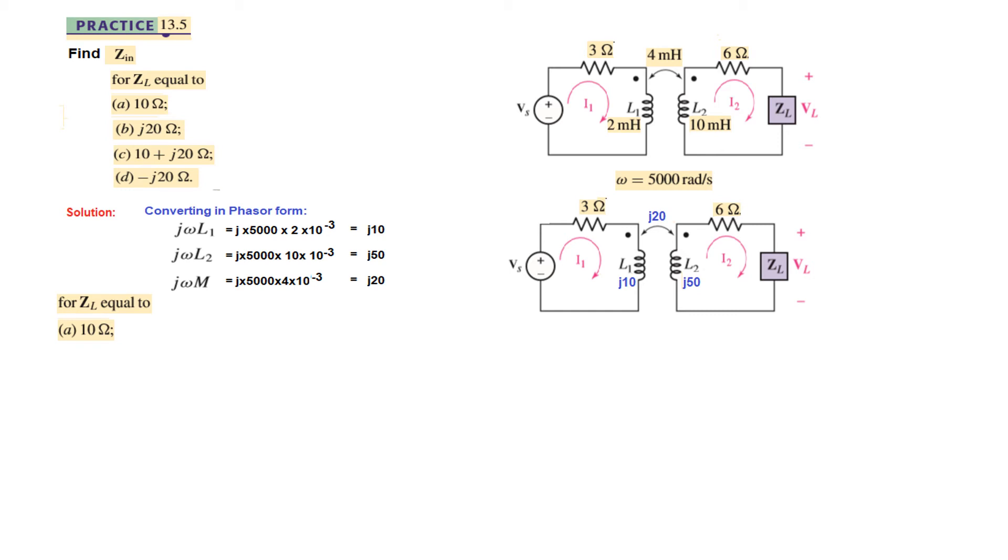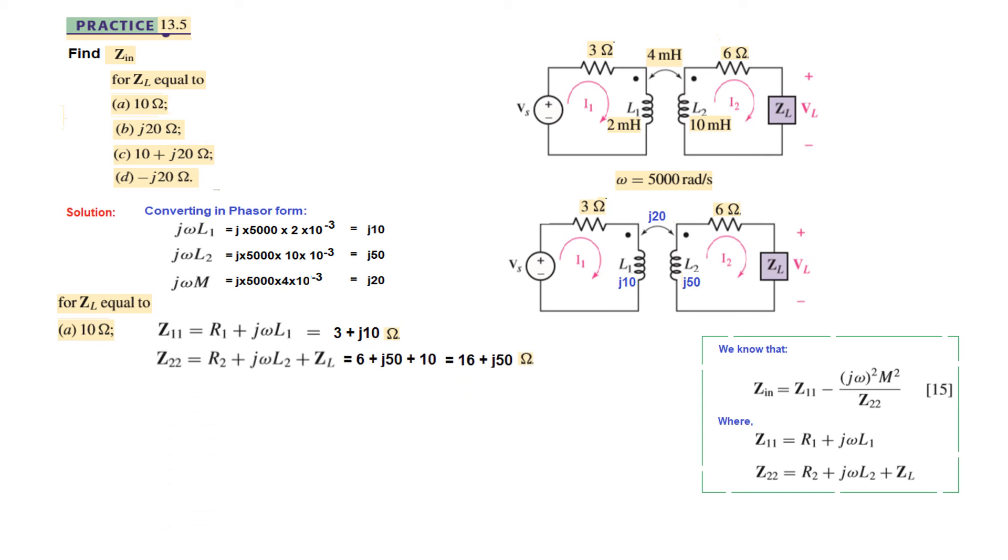In the first part we have to find Zin for ZL equal to 10 ohms. We use the formulas for Z11, Z22, and Zin. Plugging in the values directly, Z11 equals R1 plus j omega L1, which is 3 plus j10. Similarly Z22 equals R2 plus j omega L2 plus ZL, which is 6 plus j50 plus 10, giving us 16 plus j50.